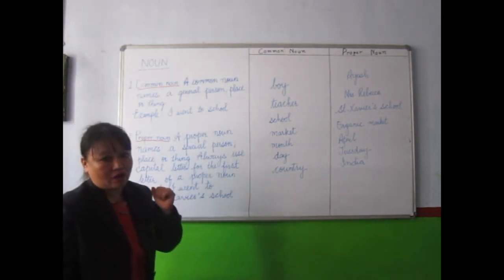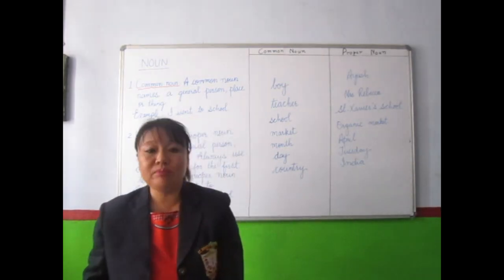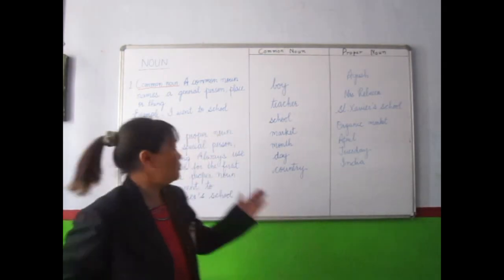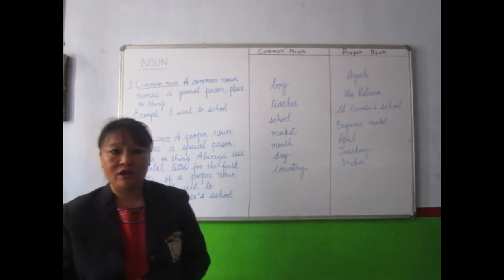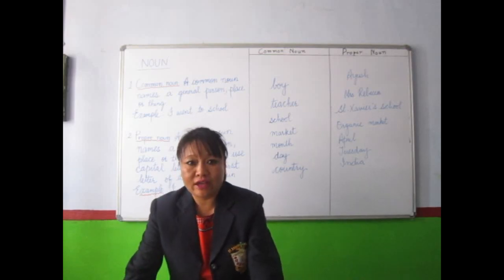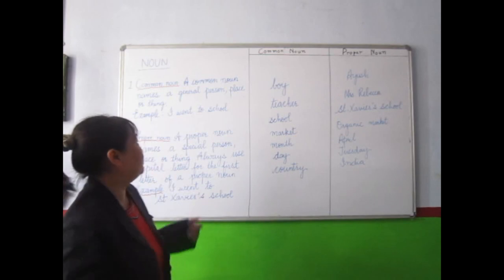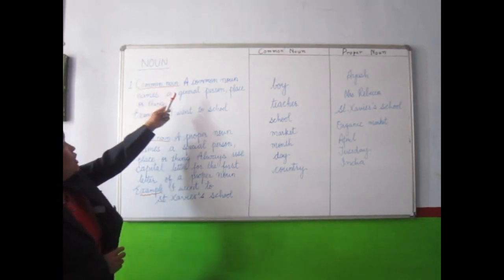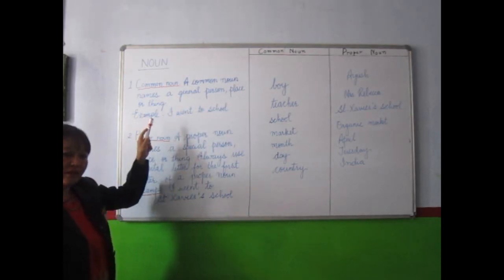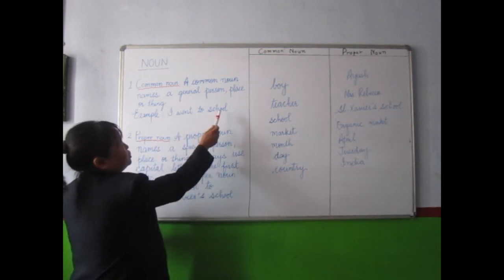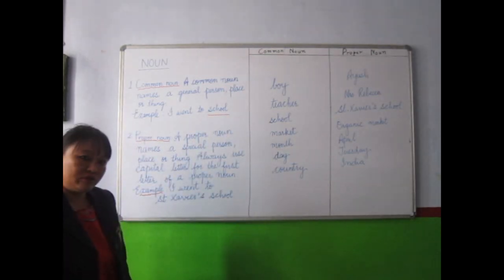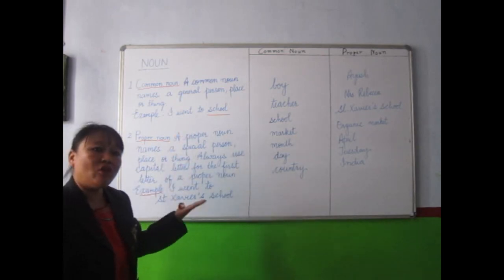A common noun talks about a general person, place or thing. But a proper noun talks about a particular thing, place or person. Today we will learn about common nouns. A common noun means a general person, place or thing. Example: I went to school. Here, school is a common noun — school means any one of the schools.